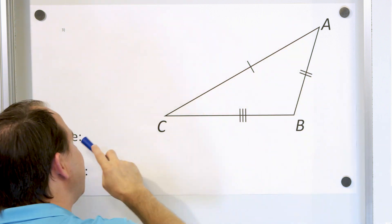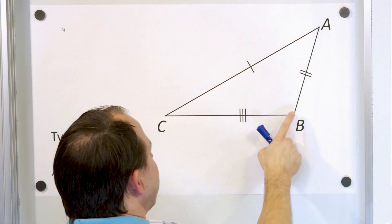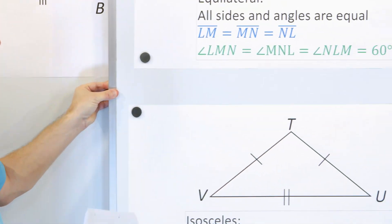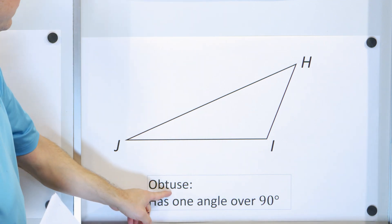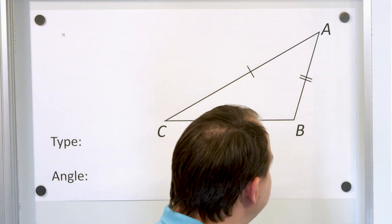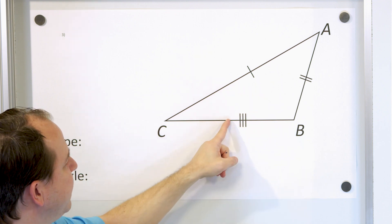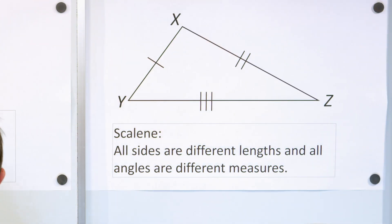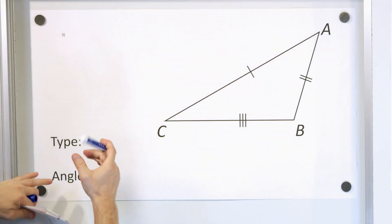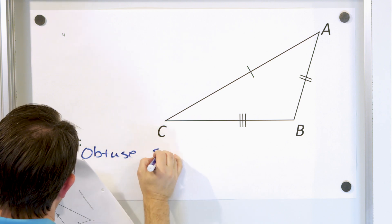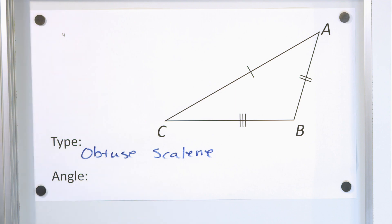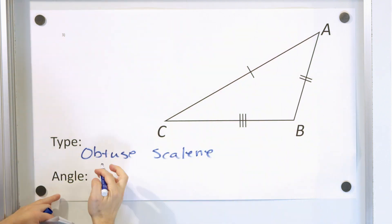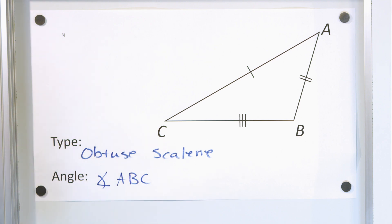Problem number three: we have a triangle. First, we see it's a laid-back triangle — this angle, if it were straight up and down, would be 90 degrees, but it's larger than that. So because one angle is larger than 90 degrees, this is an obtuse triangle. It's also a scalene triangle because all three sides have different lengths. So we call it an obtuse scalene triangle. The question asks which angle is greater than 90 degrees — it's angle ABC.